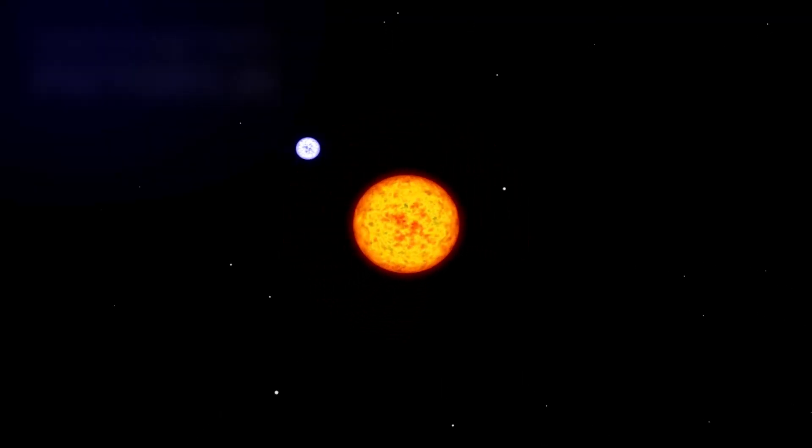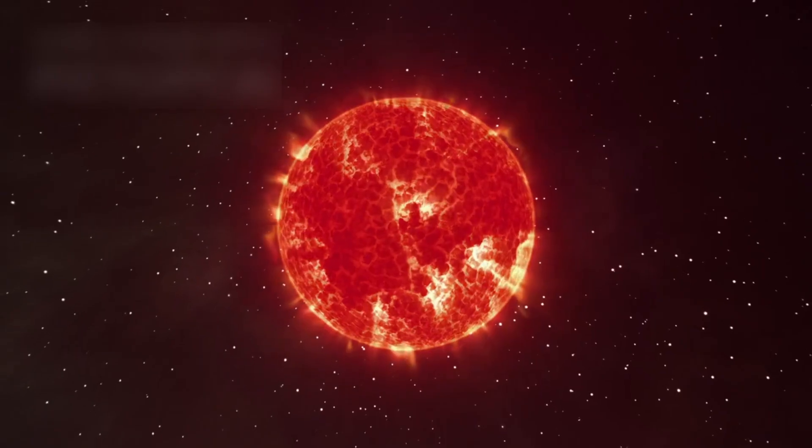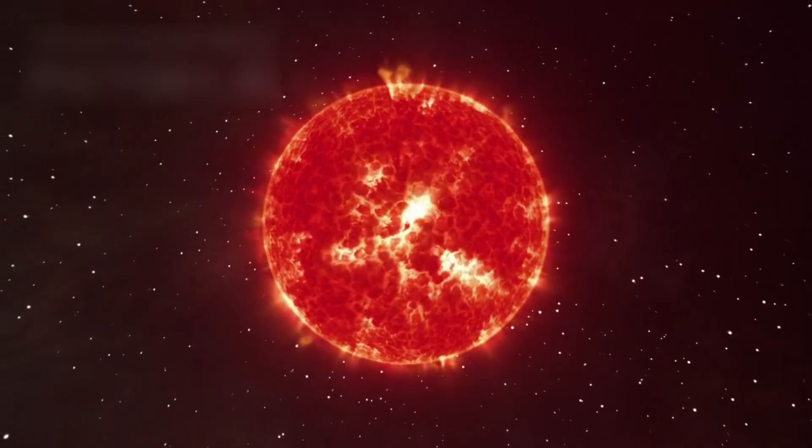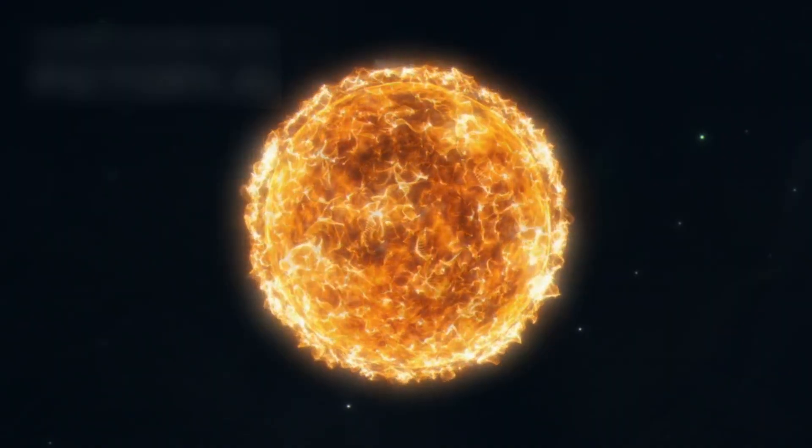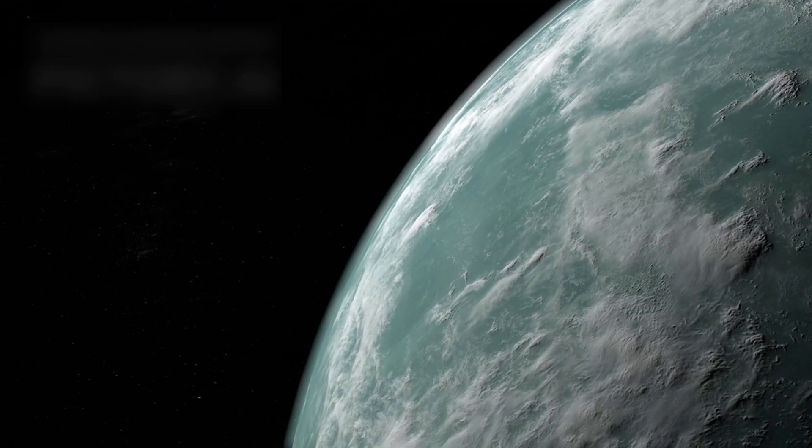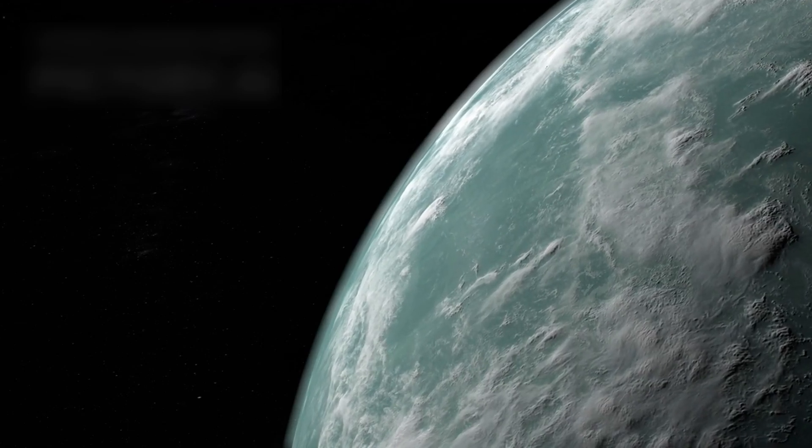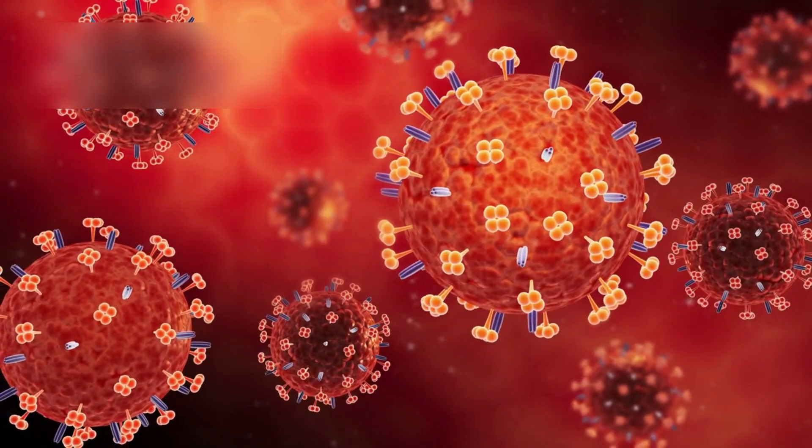You might think such proximity would incinerate the planet, but its red dwarf star shines with gentle heat, far cooler than our own Sun. This balance has made the unthinkable possible: signs of vaporized water in the planet's atmosphere. This finding shook the scientific world.